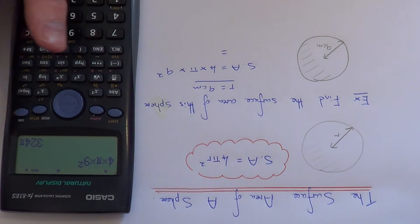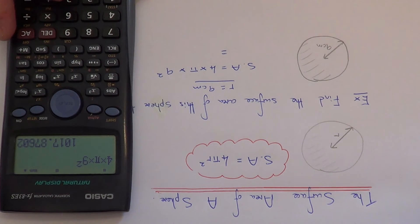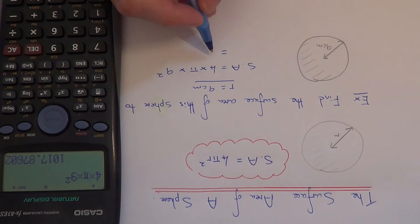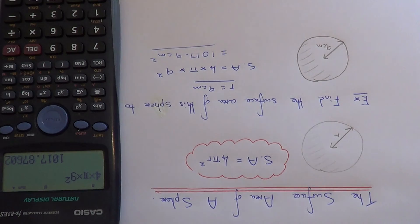So as an exact answer, it's 324 pi. But we need our answer to one decimal place. So our final answer would be 1017.9 centimetres squared. Thanks for watching.